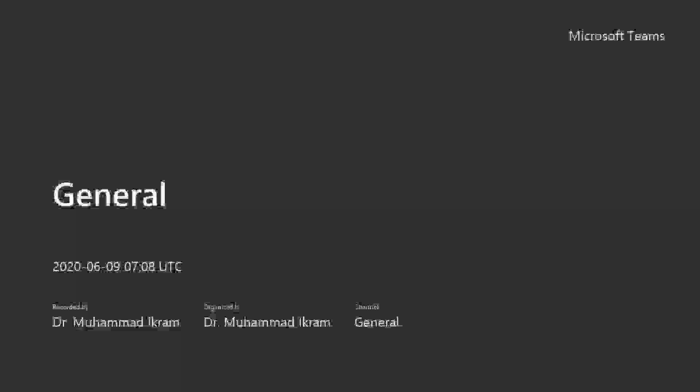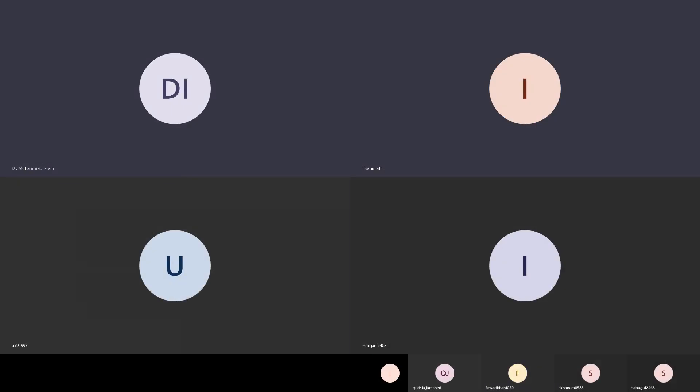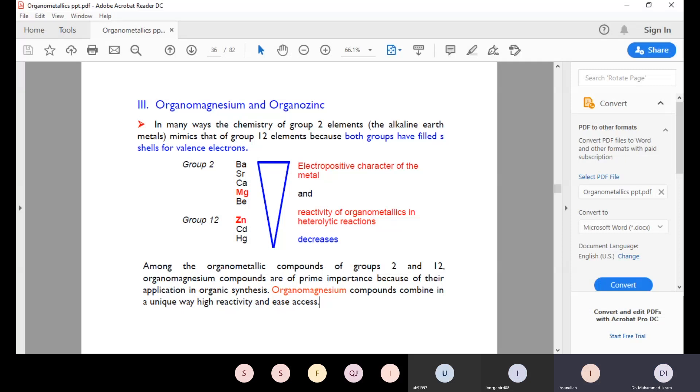We started organolithium chemistry and talked about how organolithium compounds are built, how they work, and how their reactivity goes towards organic substrates. Today we will be talking about organic magnesium and probably about organic zinc.